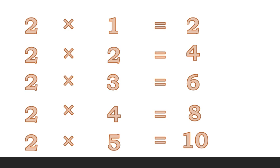Two ones are two. Two twos are four. Two threes are six. Two fours are eight. Two fives are ten. Now, come on, let's do further.